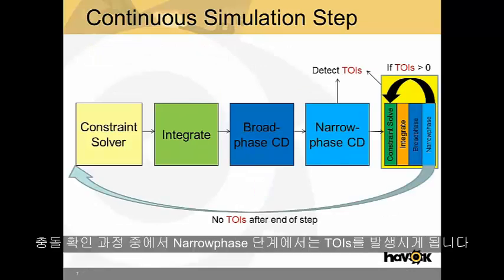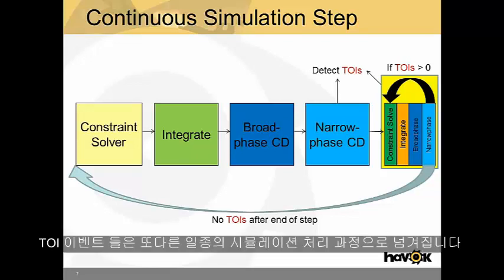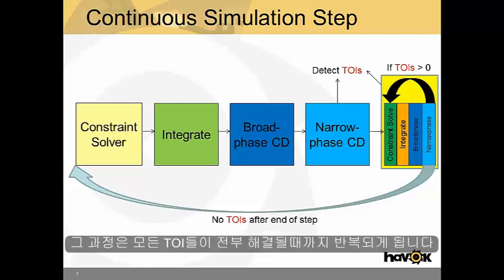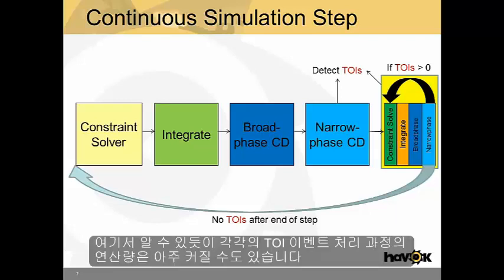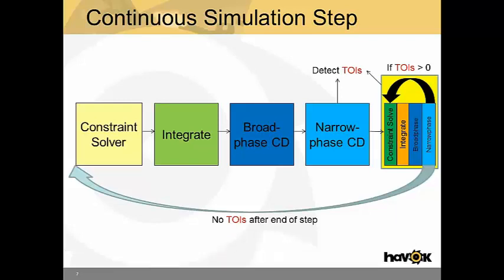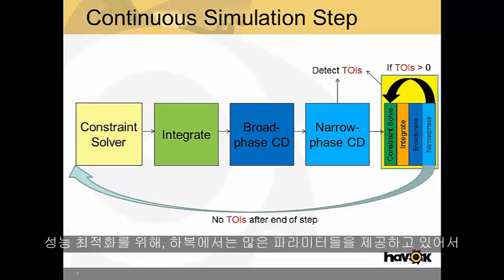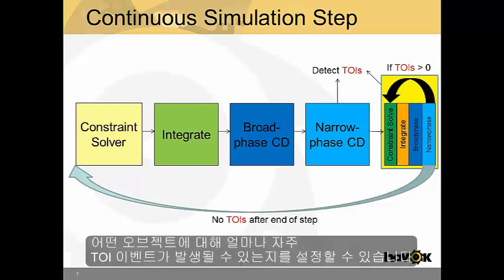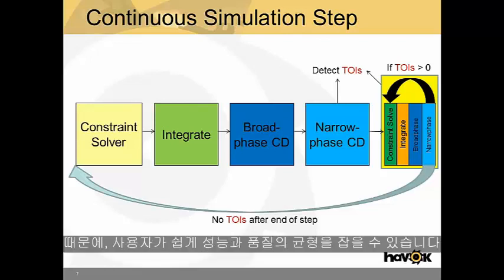In continuous simulation, the narrow phase collision detection step can generate TOIs. TOIs are then passed along to a final mini-step which will iterate until all TOIs are solved. As you can imagine, TOIs can be really expensive. For this reason, Havok allows many parameters to be tweaked to determine how often TOIs occur and for which objects. This allows you, the user, to balance performance versus accuracy.